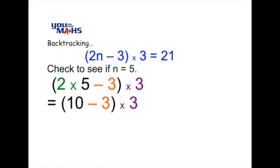And when we multiply that by 3, we get an answer of 21. So we have solved the problem correctly using the backtracking method to get an answer of n equals 5.